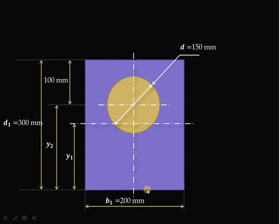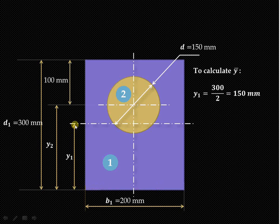We will take this bottom as a reference and first calculate y1. This rectangle we have considered as the first section. This second section is the circle which is cut out. To calculate y1, taking this bottom as the reference, y1 will be equal to 300 divided by 2, that is 150 mm.